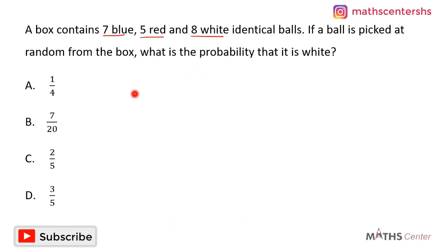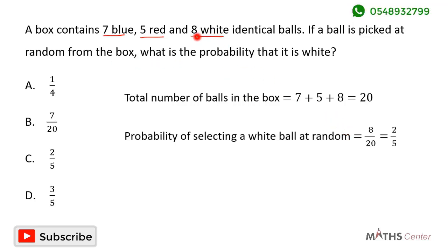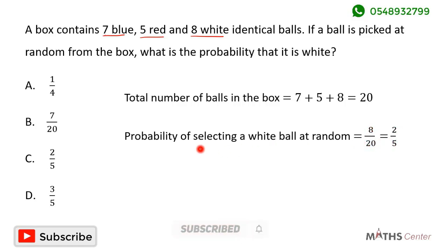The total number of balls in the box is equal to the number of blue balls which is seven, plus the number of red balls which is five, plus the number of white balls which is eight. Seven plus five plus eight gives us twenty. The probability that a ball selected at random is white equals eight divided by twenty, which simplifies to two divided by five.